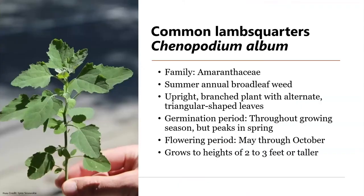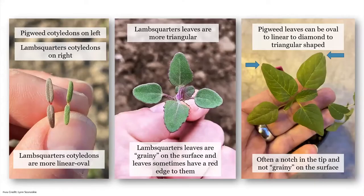Moving on to common lambsquarters, also called Chenopodium album, also in the amaranth family and another summer broadleaf weed. It is another upright, branched plant with alternate, triangular-shaped leaves — as opposed to pigweeds which are more diamond- and oval-shaped. Its germination period is throughout the season but peaks in spring, and it typically flowers from May to October. It grows two to three feet in height, but can grow much taller — I've stood next to common lambsquarters that were my height or taller.